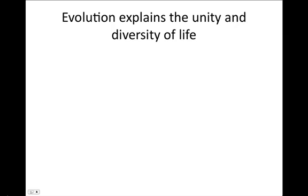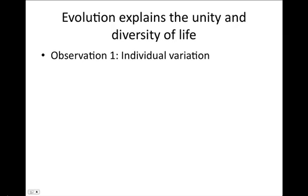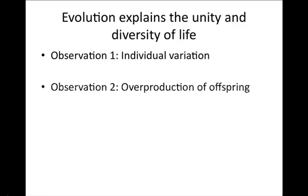Evolution explains the unity and diversity of life. Evolution refers to species living today that are descendants of ancestral species. Charles Darwin's natural selection proposed a mechanism for evolution based on two observations, which gave rise to two inferences. Observation 1: individual variation — individuals in a population vary in many heritable traits. Darwin's second observation is the over-reproduction of offspring, saying that all species have the potential to produce far more offspring than will survive to produce offspring of their own.